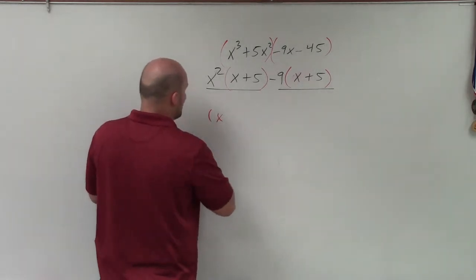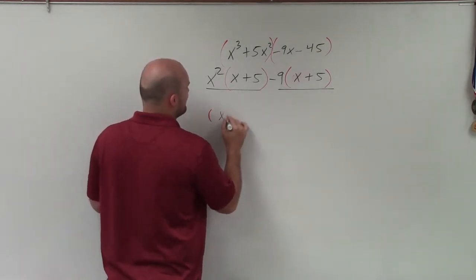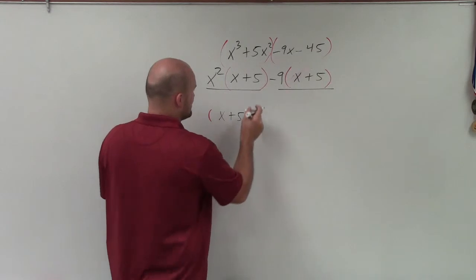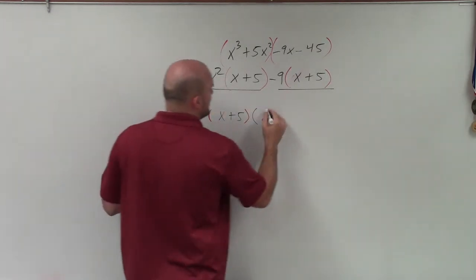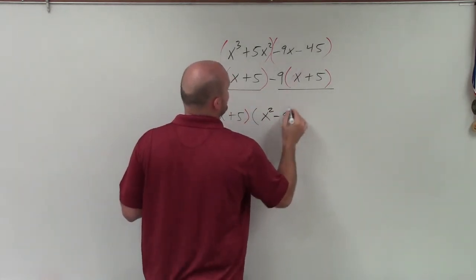So when I factor out the common factor x plus 5 from both of my expressions, I am now left with x squared minus 9.